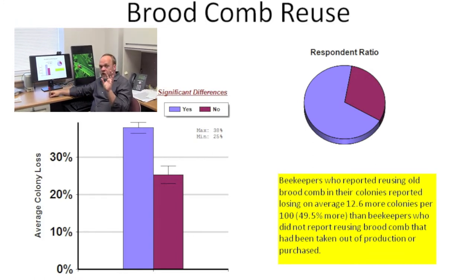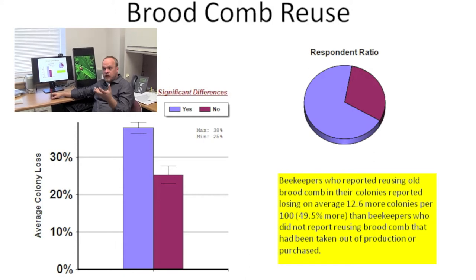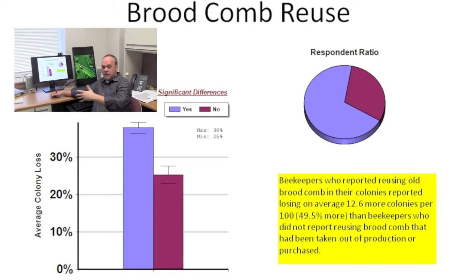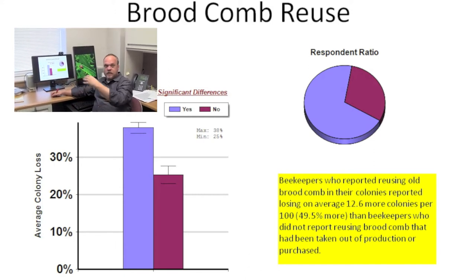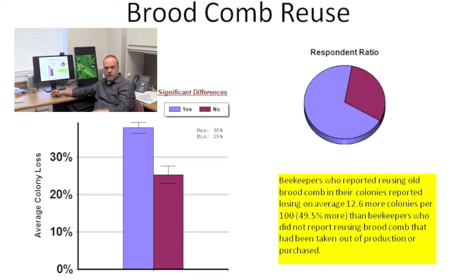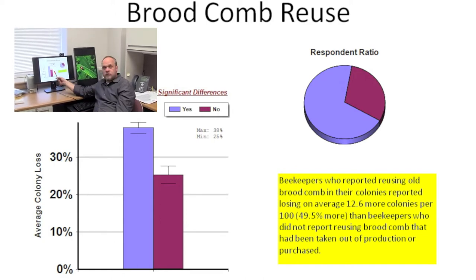Again though, we can't draw causation here. It could be that the people who have these endemic problems of high mortality just have more brood comb to reuse. And so this might be the consequence rather than the cause of increased mortality.